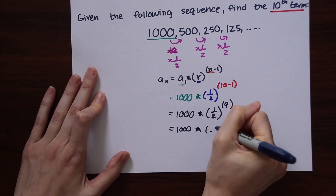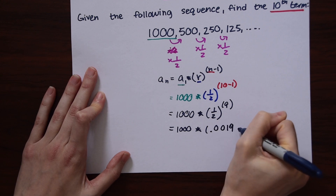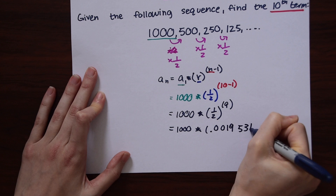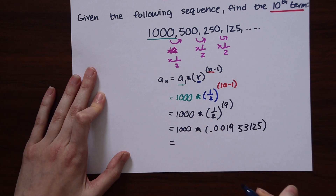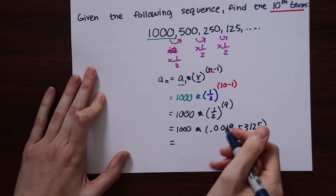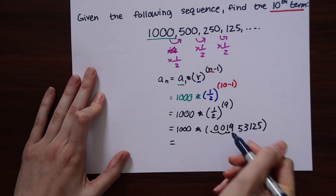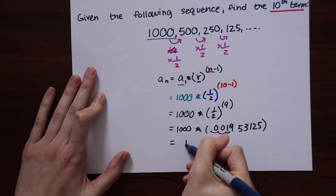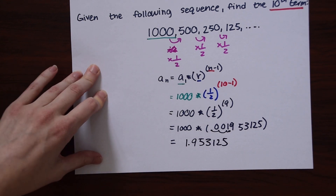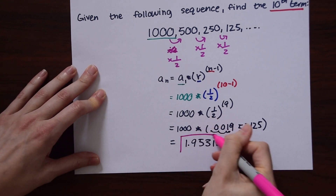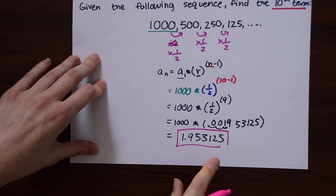One half to the 9th power is going to give us a really long decimal: 0.001953125. Then multiplying by 1,000 — moving the decimal three places — we get 1.953125. And that is our answer. So the 10th term of this sequence is 1.953125.